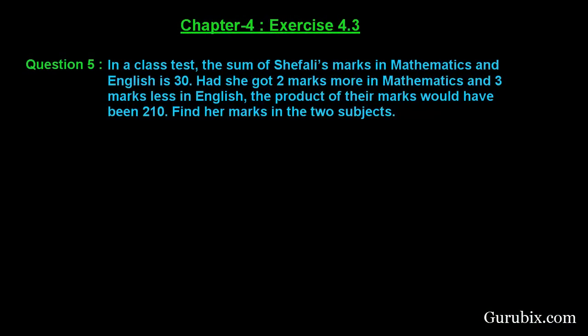Welcome friends, let us solve question number 5 of exercise 4.3 of chapter 4. The question says: In a class test, the sum of Shefali's marks in mathematics and English is 30. Had she got 2 marks more in mathematics and 3 marks less in English, the product of their marks would have been 210.